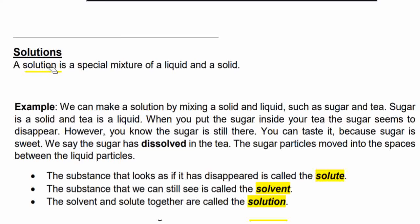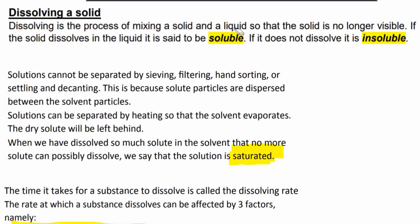We also learned about solutions. What is a solution? A solution is a special mixture of a liquid and a solid. We can make a solution by mixing a solid and liquid, such as sugar and tea. Sugar is a solid and tea is a liquid. When you put the sugar into your tea, the sugar seems to disappear — however, you know the sugar is still there because you can taste it. The sugar has dissolved in the tea. The sugar particles move into the spaces between the liquid particles. The substance that appears to have disappeared is called the solute — in this case, the sugar. The substance you can still see is called the solvent — in this case, the tea. The solvent and solute together are called the solution. If a solid dissolves in a liquid, it is said to be soluble; if it does not dissolve, it is insoluble.